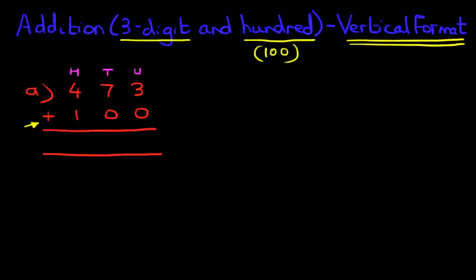Now we're doing addition and we always start on the right hand side. I'm not going to bother circling it. I'll just put a little mark here. 3 plus 0 is 3. 7 plus 0 is 7. And lastly, 4 plus 1. 4 plus 1 is 5.